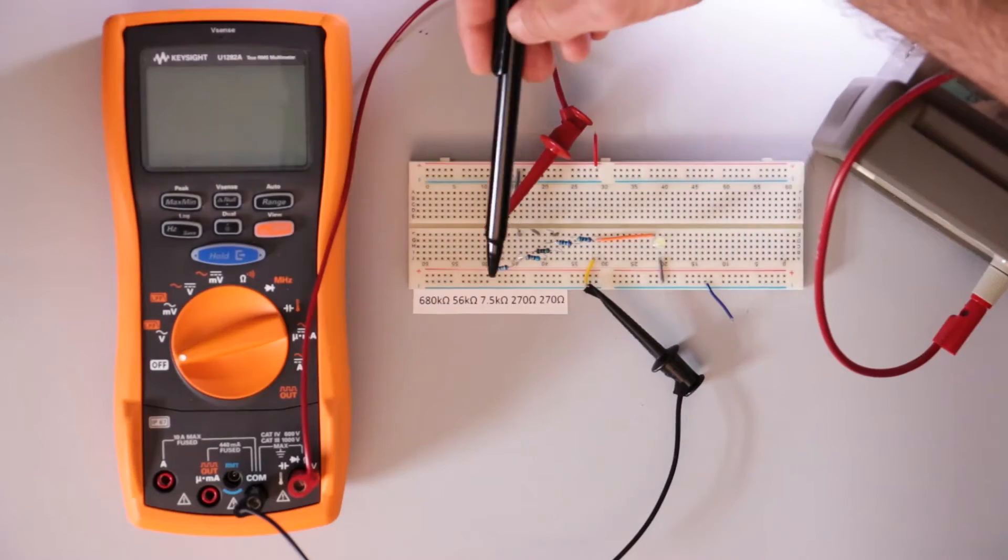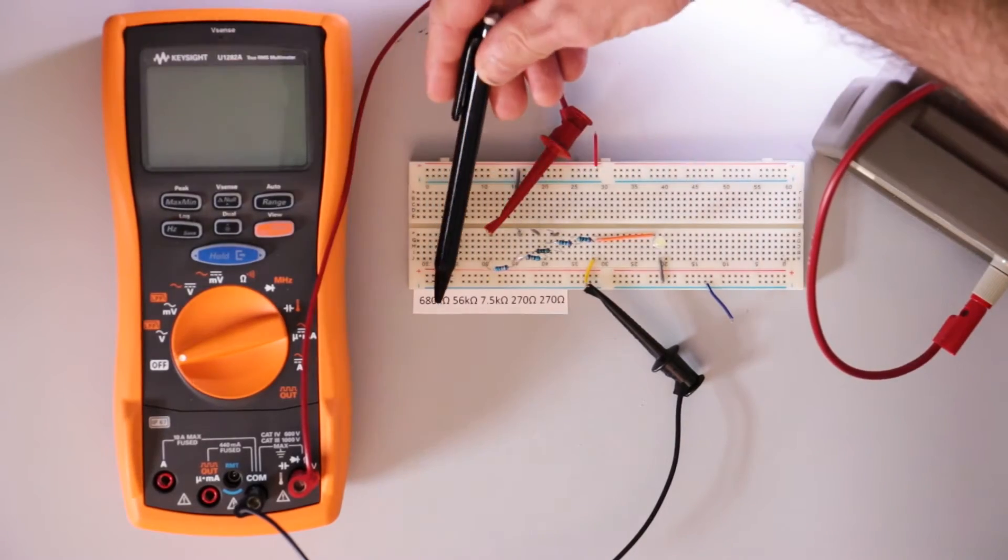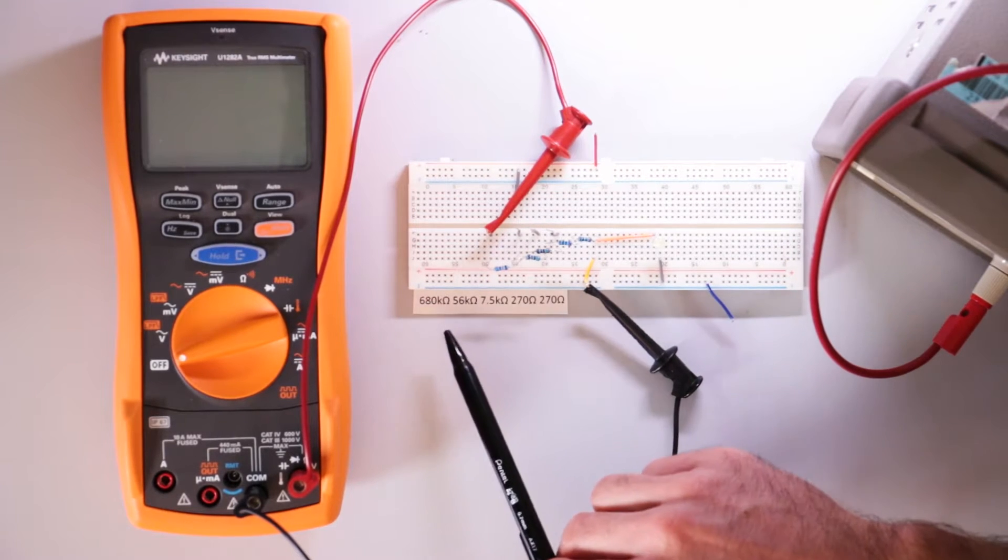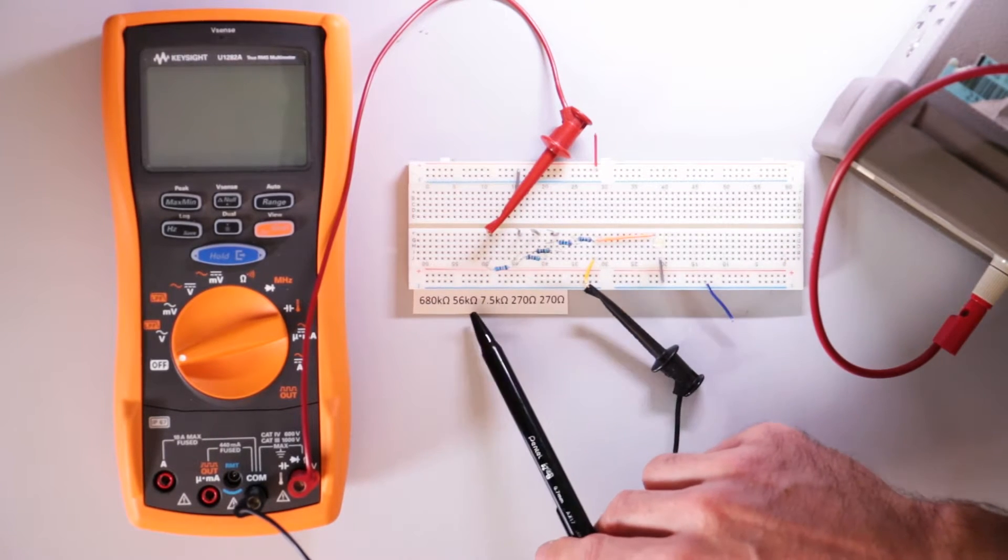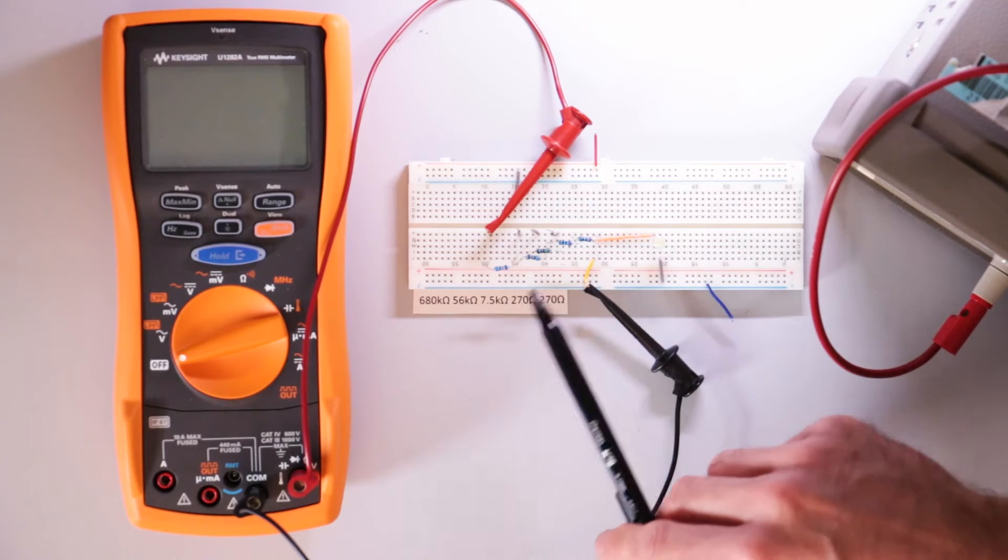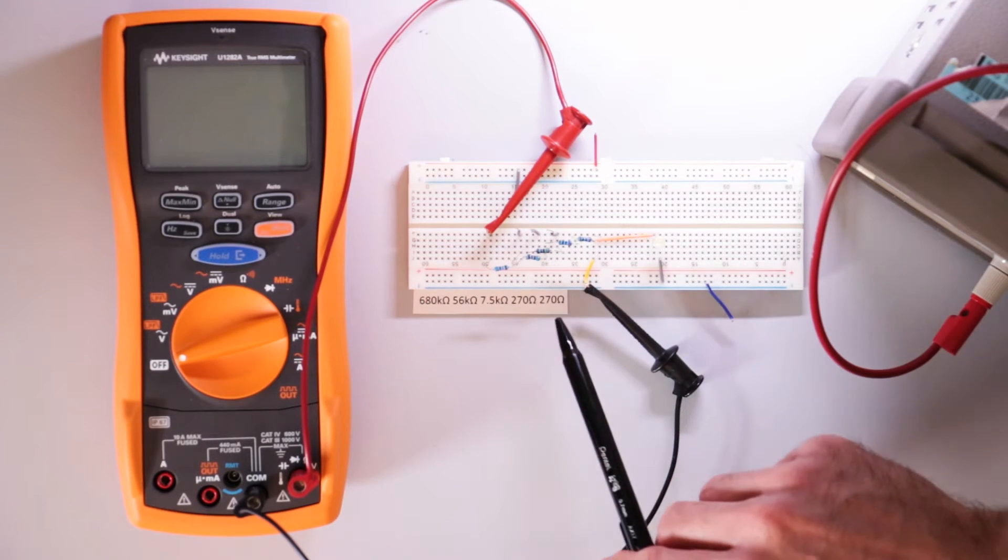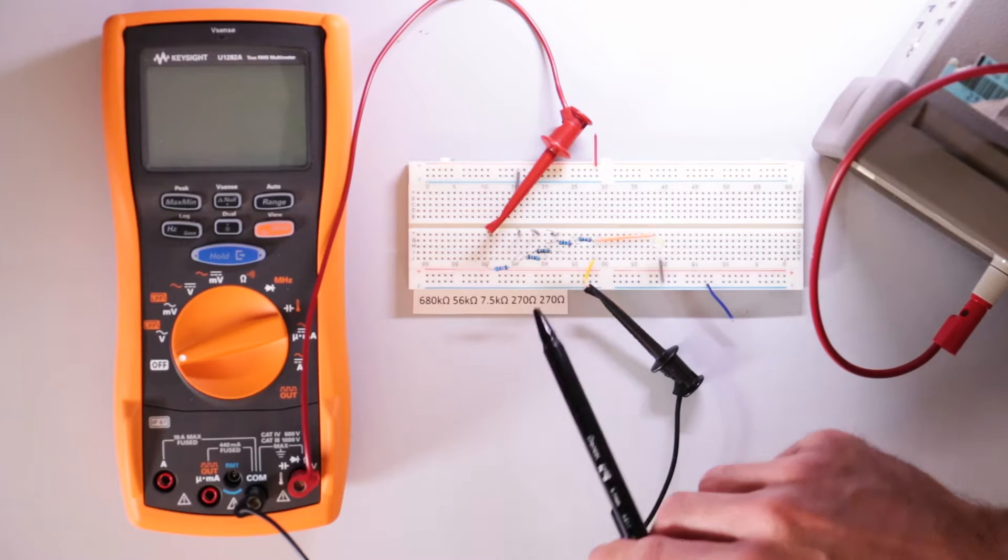What I have here are five resistors placed in series. You have a 680 kilohm resistor right here, a 56 kilohm resistor here, 7.5 kilohm right here, and then there are two 270 ohm resistors right here.